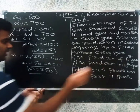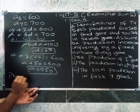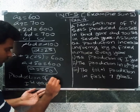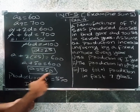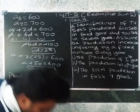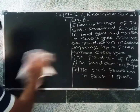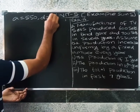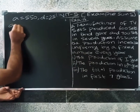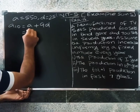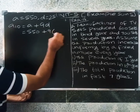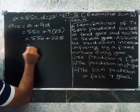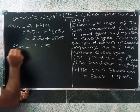So the production of the first year equals 550. Next, the production of the 10th year: a10 equal to a plus 9d, so a equals 550 plus 9 into d equals 25, giving 550 plus 225, so a10 equal to 775.